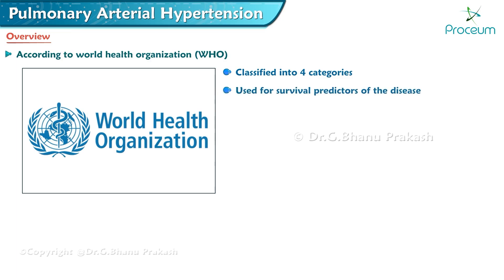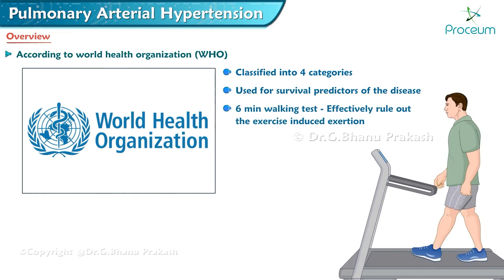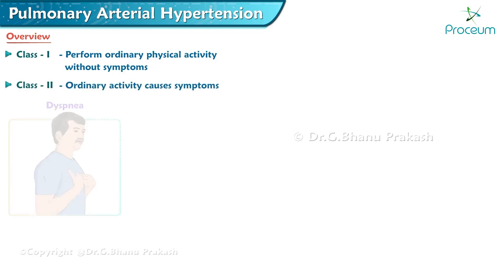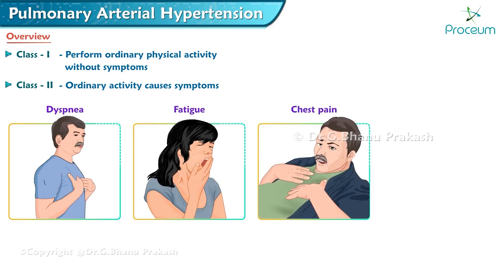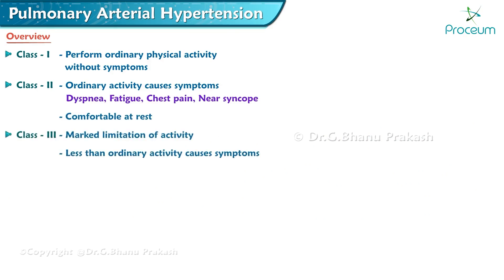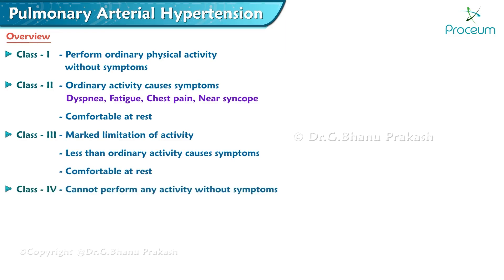The six-minute walking test is considered effective to rule out exercise-induced exertion. Class 1: can perform ordinary physical activity without symptoms. Class 2: ordinary activity causes symptoms of dyspnea, fatigue, chest pain, or near syncope; comfortable at rest. Class 3: marked limitation of activity — less than ordinary activity causes symptoms; comfortable at rest. Class 4: cannot perform any activity without symptoms; dyspnea and/or fatigue at rest.